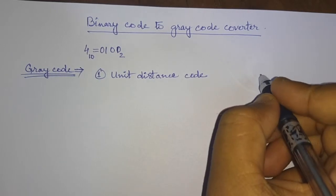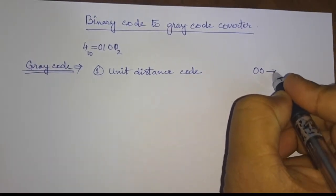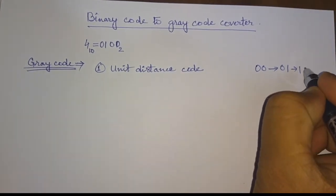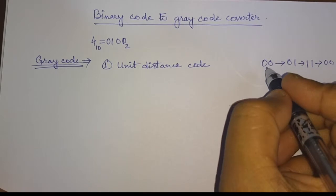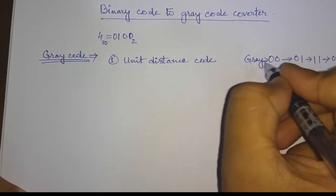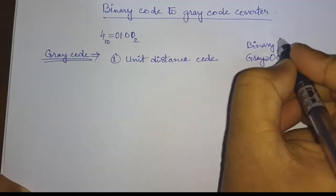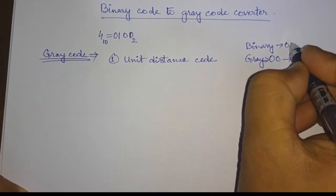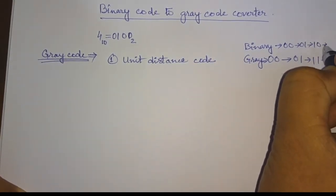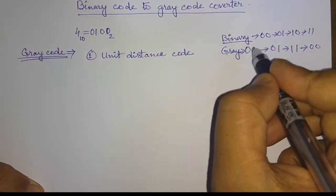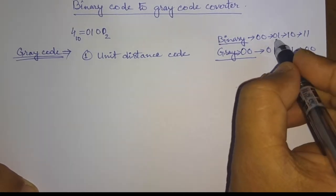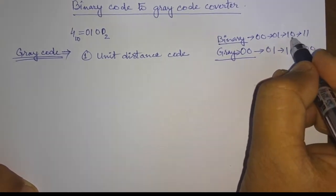Suppose if we have 00 first, then the next gray code will be 01, then next will be 11. But in the case of binary number system, we have 00, then 01, then 10, then 11. Therefore, we can see that in binary number system from 00 to 01, there is one single bit change. And from 01 to 10, there we have a 2-bit change.